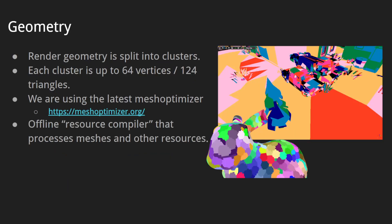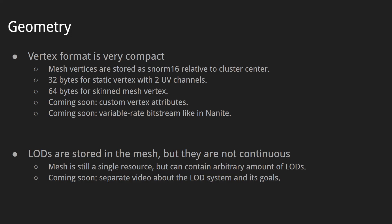Our geometry is split into clusters. Each cluster contains up to 64 vertices and can form up to 124 triangles. We use the latest MeshOptimizer to build and process our meshes and compute the clusters. We have an offline resource compiler that processes meshes and other resources. We have a very compact vertex format: mesh vertices are stored as signed normal 16 bits relative to cluster center — 32 bytes for a static vertex with two UV channels, and 64 bytes for a skinned mesh vertex.